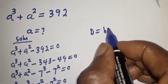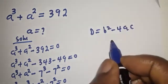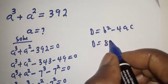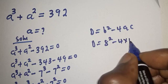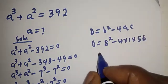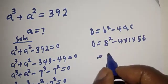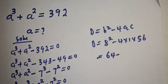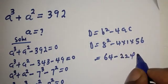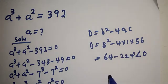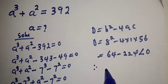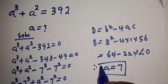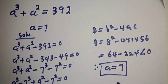The discriminant d equals b squared minus 4ac. So d equals 8 squared minus 4 times 1 times 56, which equals 64 minus 224. This is less than zero. Therefore the only real solution we have is a equals 7, and this is the final answer.